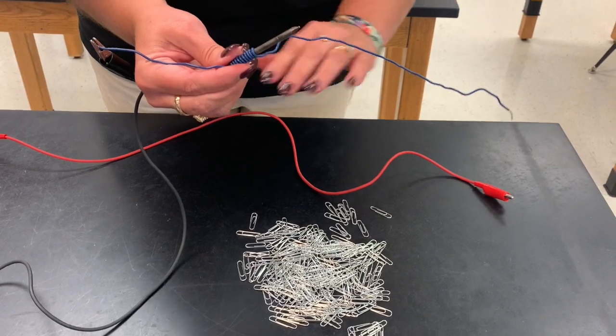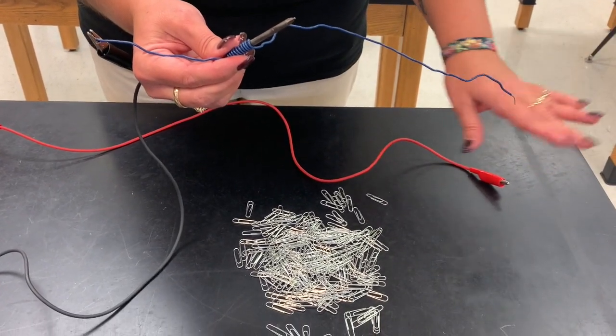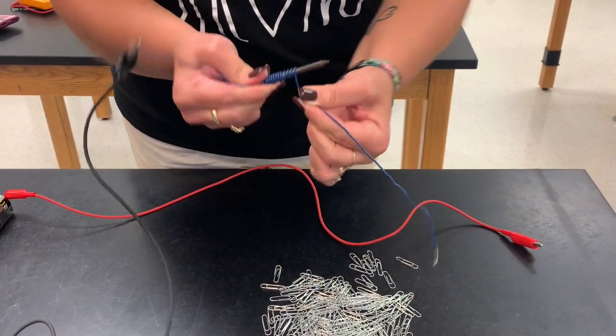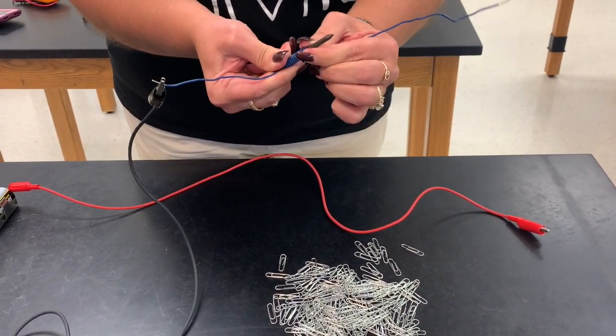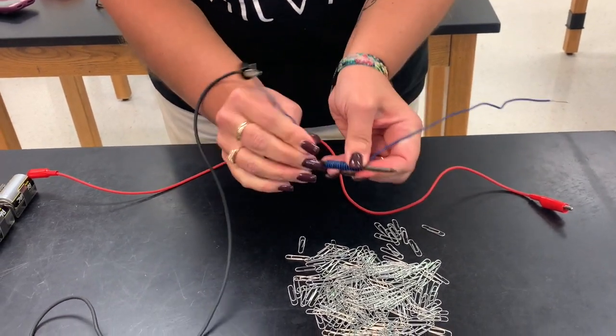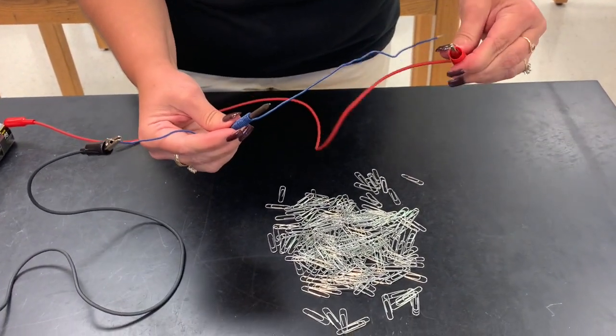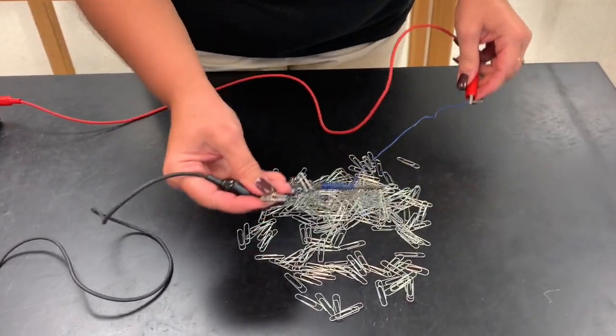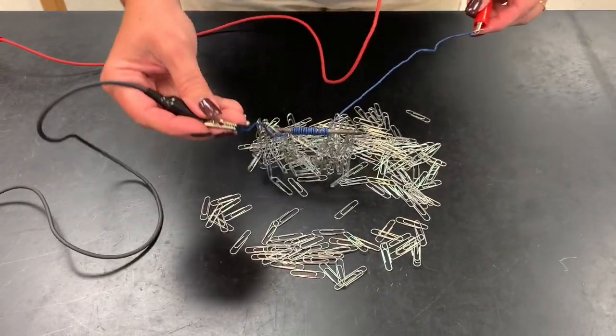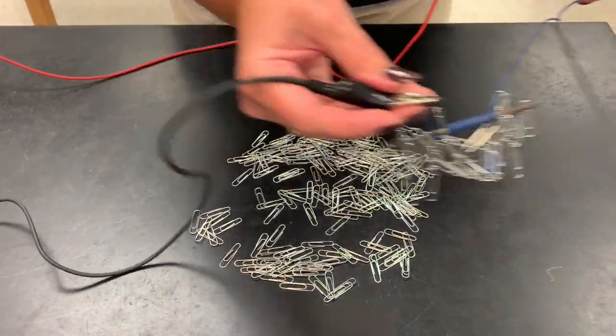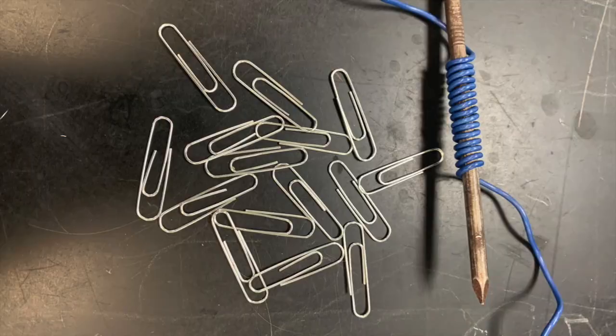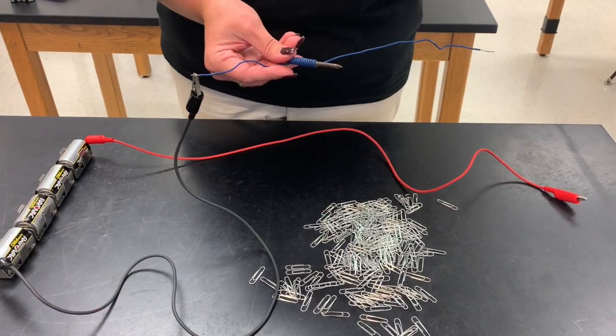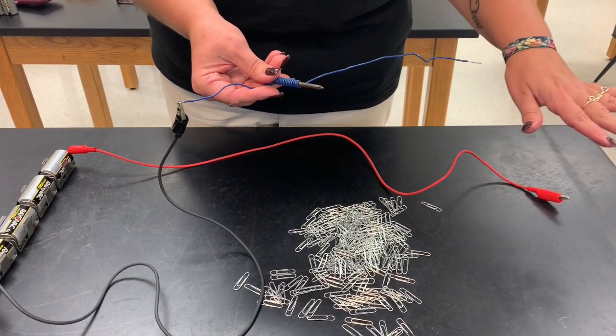Alright everybody so now I counted how many I picked up with 10 wraps so I'm going to wrap one, two, three, four, five more times. I'm going to push those really closely together. I'm now going to close my circuit again and I'm going to pick up paper clips again and if I pick up more it's showing that I have a stronger magnetic field and so I do this for 10 seconds. I move off to the side.